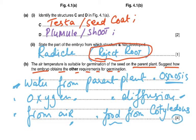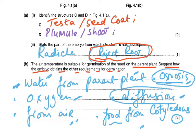There are four marks but six marking points: water is one mark, from the parent plant is the second, osmosis is the third, oxygen is the fourth, from the air is the fifth, diffusion is the sixth — and the food from cotyledons. Note: if you wrote either diffusion or osmosis, whether for water or oxygen, it counts as only one mark total.